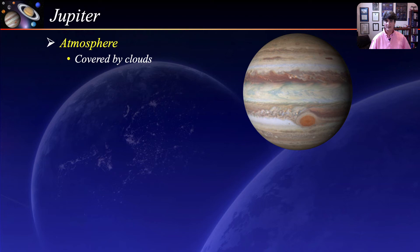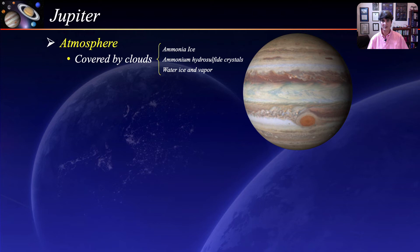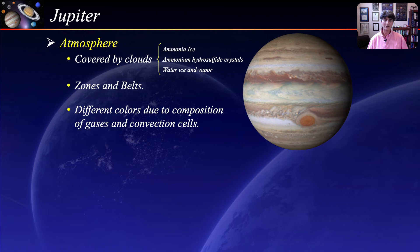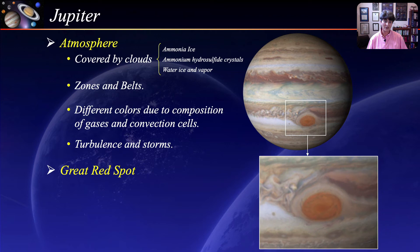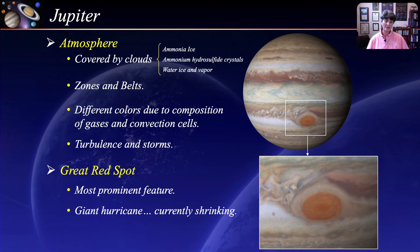Jupiter is perpetually covered by a cloudy atmosphere. The cloud layer is about 44 miles deep and likely has three distinct layers with various ice crystals and vapors. The colorful bands parallel to the equator are called zones and belts — zones are the lighter colored bands while belts are the darker ones. Different colors are caused by different compositions of gases and by rising and sinking of gases within convection cells. The interactions of these circulation patterns cause storms and turbulence. The most famous storm is Jupiter's Great Red Spot — about twice as wide as Earth, it has persisted for centuries and is basically a giant hurricane that changes color and size over time.